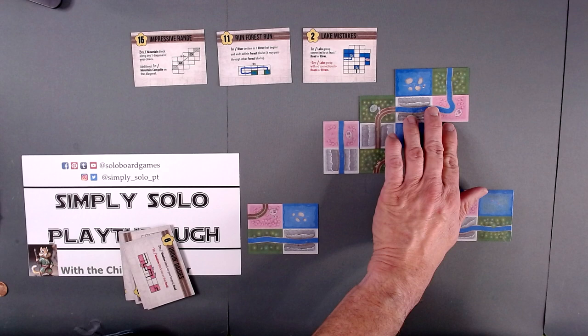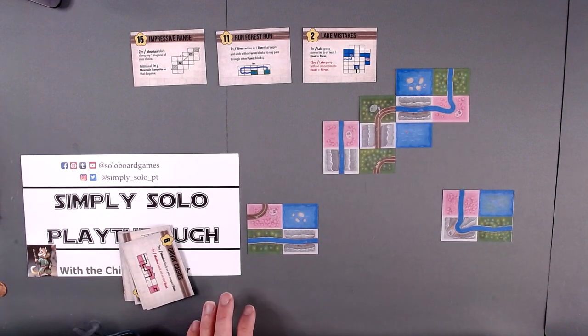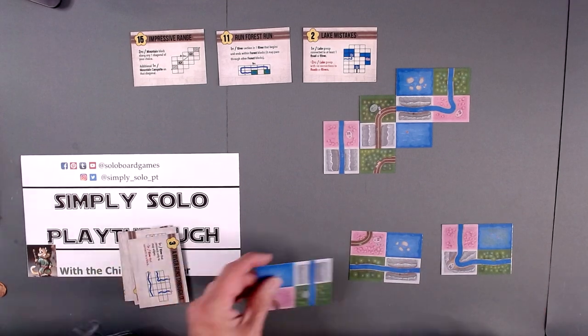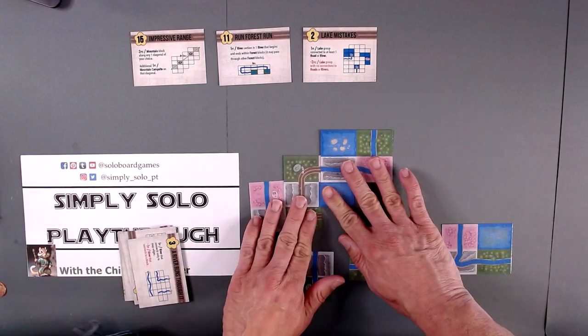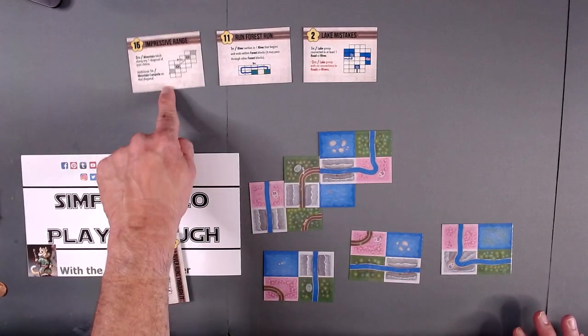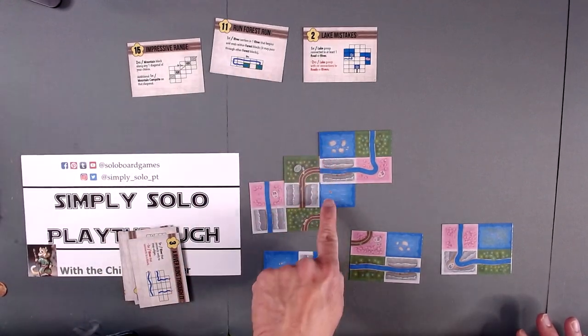This works with the diagonal Impressive Range as well as we start our Run Forest Run.